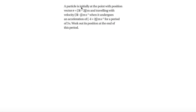The next question says that a particle is initially at the point with position vector r equals 3i minus 2j, and is traveling with velocity 5i minus j when it undergoes an acceleration of minus i plus 2j for a period of 3 seconds. Work out its position at the end of this period. For this one we're going to work out the displacement and then add it to its initial position, since it doesn't start at the origin.